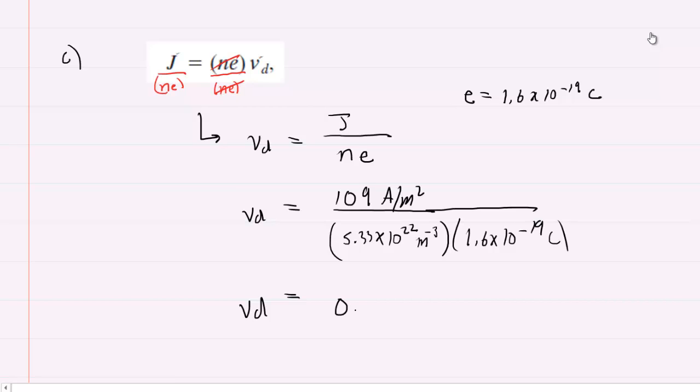When we do so we get 0.0128. Everything we used was in standard units and we're calculating a speed, so dimensionally this works out to meters per second. This is the correct answer to part C.